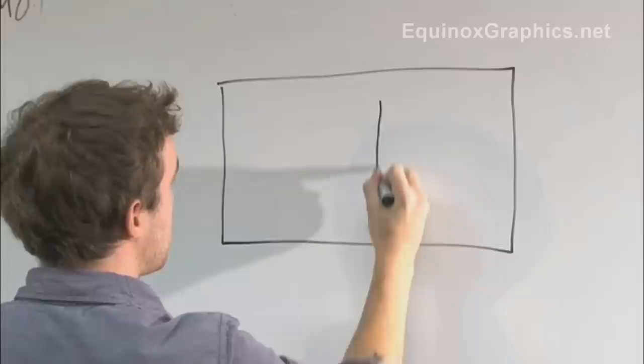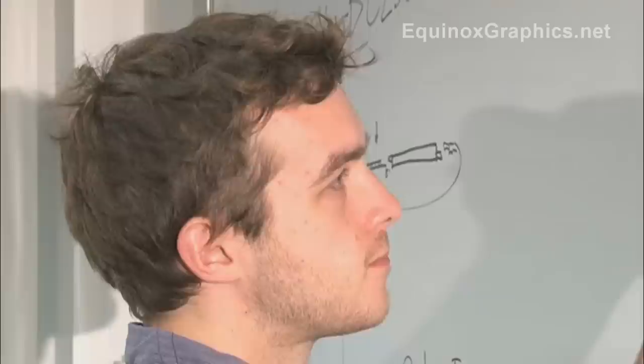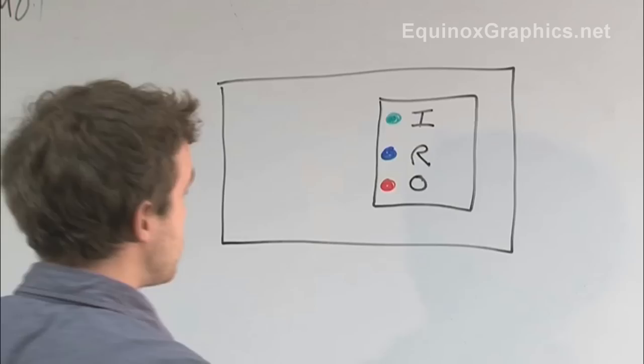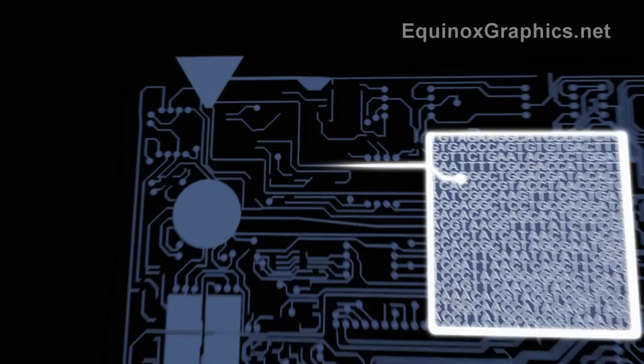We call our host organism — in this case our bacteria — a chassis, and we think about our DNA as computer software. We think about the individual functional parts in terms of modules: an input module, a response module, and an output module. And when our synthetic DNA software is booted up, all our DNA modules create the functional components of the cell.